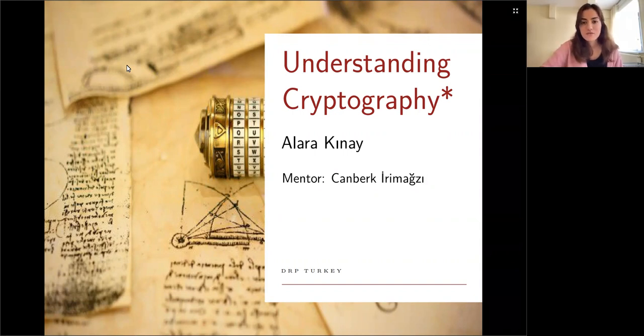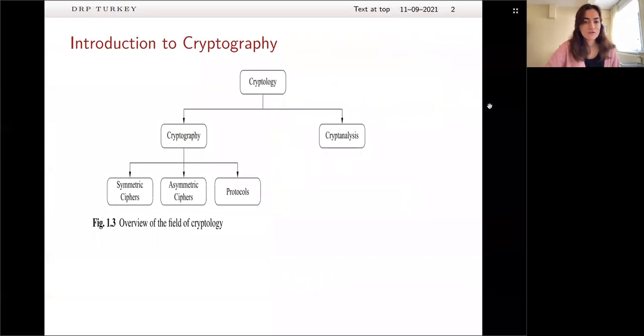So first of all, I want to give a brief introduction, what cryptography is actually. So cryptography is a branch of cryptology and cryptology has two main branches, which are cryptography and cryptanalysis. Cryptography is the science of secret writing and cryptanalysis is science and art at the same time. The book says that cryptanalysis is the science and art of breaking cryptosystems. I know it sounds a bit evil, but even though cryptanalysis sounds evil, it's the only way to assure if a cryptosystem is secure enough.